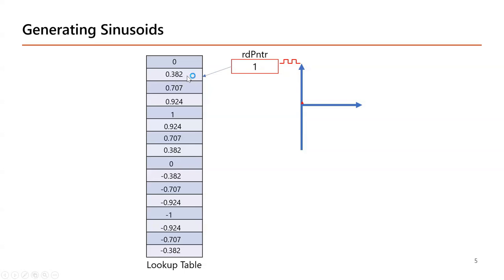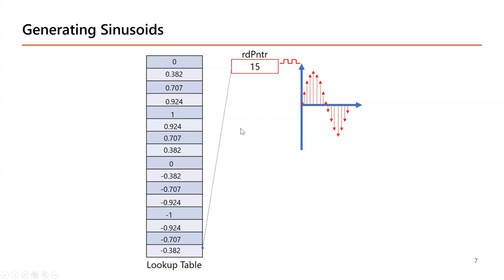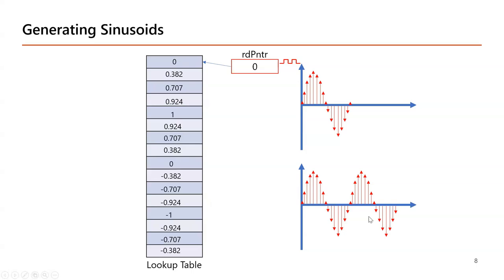On the next clock edge I increment the read pointer by one, so it points to the second location and the output corresponds to 0.382. I continue this operation — on every positive edge of the clock I increment the read pointer and get the corresponding value from the lookup table. Once the pointer reaches the maximum value, with 16 samples it rolls over back to zero and starts reading again, giving a continuous sine wave.